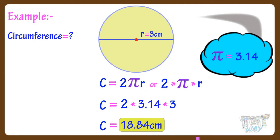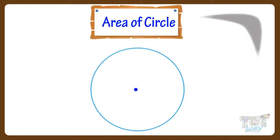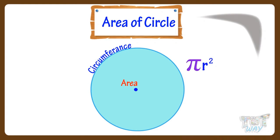Now we know how to find out the circumference of the circle. Now let's learn how we can calculate the area of a circle. Area of a circle is the area inside the circumference of a circle. We can find the area of a circle by using the formula πr², that is π multiplied by r multiplied by r.